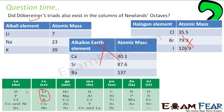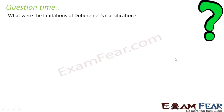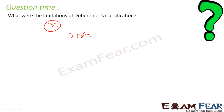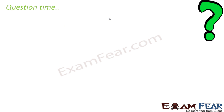The next question: what are the limitations of Dobereiner's classification? At that time, 33 elements were known, but not all could be classified into Dobereiner's triads. Only three triads with three elements each were formed, meaning only nine elements were part of his classification. The remaining elements were not classified — that was the key limitation.